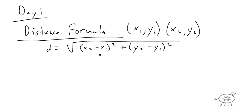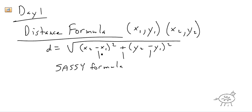A lot of people get confused and wonder how to remember the formula — is it x2 plus x1 minus y2 plus y1, or is it all minus? So I always call the distance formula a SASE formula. SASE stands for subtract, add, subtract. That's just a little way to remember it.